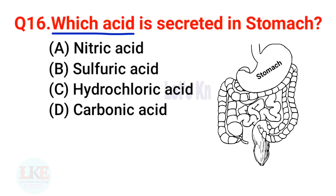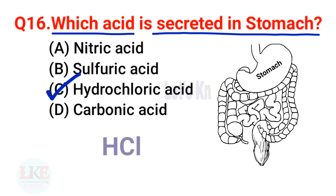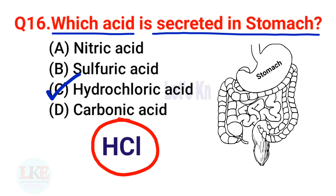Question 16: Which acid is secreted in the stomach? A) Nitric acid, B) Sulfuric acid, C) Hydrochloric acid, D) Carbonic acid. The right answer is option C, Hydrochloric acid. The chemical formula of hydrochloric acid is HCl. Remember it — it is a very important question.